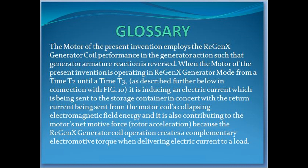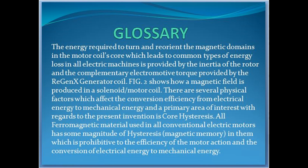When the motor of the present invention is operating in Regenx generator mode from time t2 until time t3, as described further below in connection with FIG. 10, it is inducing an electric current which is being sent to the storage container in concert with the return current being sent from the motor coil's collapsing electromagnetic field energy. It is also contributing to the motor's net motive force and rotor acceleration, because the Regenx generator coil operation creates a complementary electromotive torque when delivering electric current to a load. The energy required to turn and reorient the magnetic domains in the motor coil's core — which leads to common types of energy loss in all electric machines — is provided by the inertia of the rotor and the complementary electromotive torque provided by the Regenx generator coil.